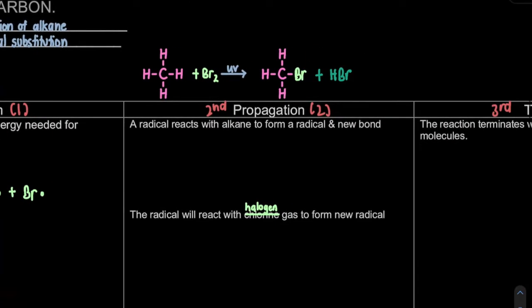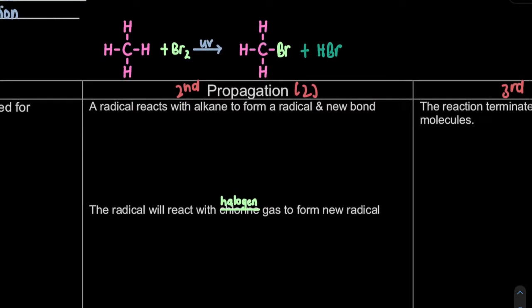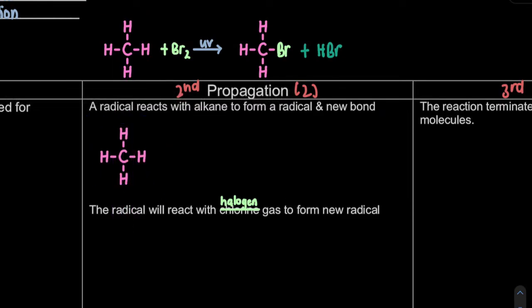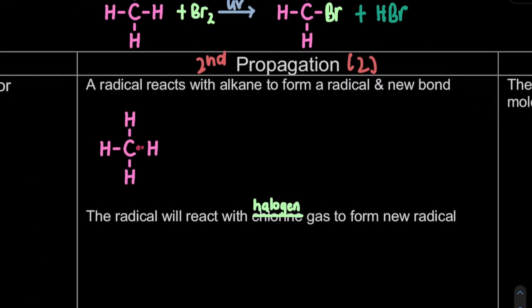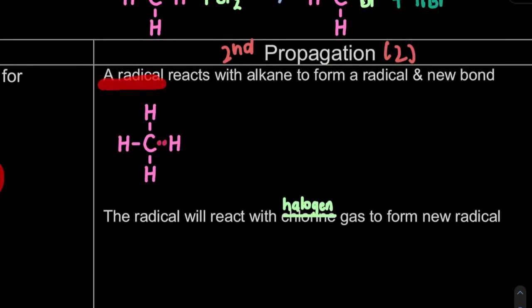Now let's look at the next step - propagation. We have two steps. First step: a radical will react with alkane to form a radical and new bond. The alkane we are interested in is methane. For this case, I would prefer to show that one bond must have two electrons. It will react with the radical that formed from the initiation step, which is our bromine radical.